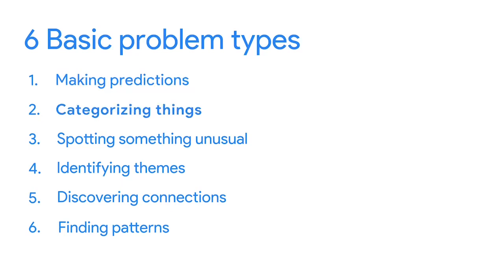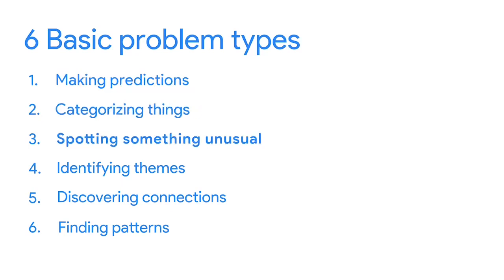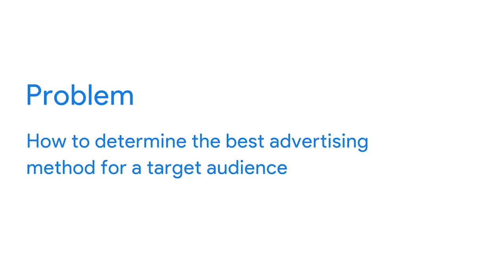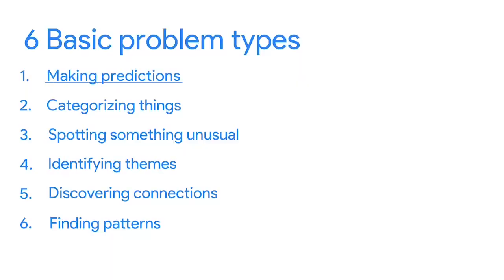Data analysts work with six basic problem types: making predictions, categorizing things, spotting something unusual, identifying themes, discovering connections, and finding patterns. Thinking back to the Anywhere Gaming Repair example, the company used data to envision what would happen if it advertised in different places. Nobody can see the future, but the data helped them make an informed decision about how things would likely work out. So their problem type was making predictions.